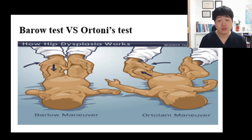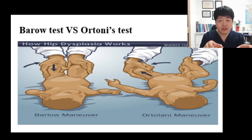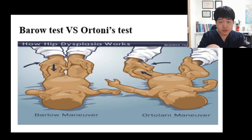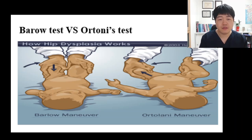The first is the Barlow test — the Barlow maneuver. The examiner grabs the infant's thigh near the hip, then gently applies a posterior press with adduction. What happens? The hip dislocates from the acetabulum.